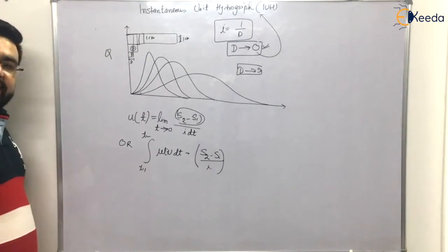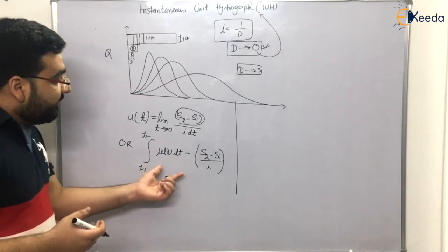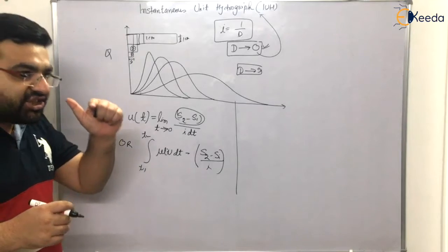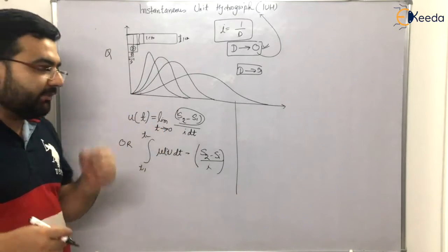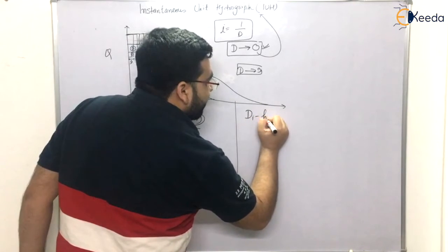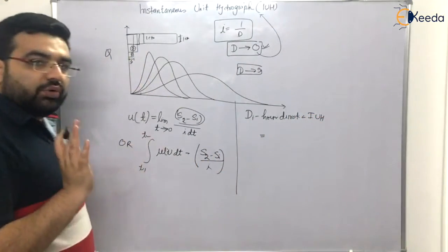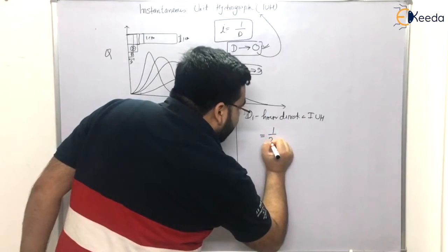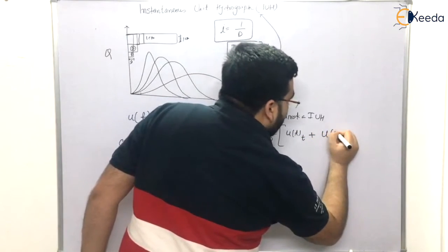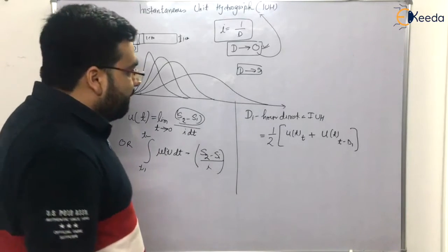To further simplify — because the formula looks very difficult — in books it is given that if you want to determine the instantaneous unit hydrograph for a particular duration D1, the instantaneous unit hydrograph equals the average of: the unit hydrograph at time t of duration D_r, plus the unit hydrograph at time (t minus D1) of duration D_r.